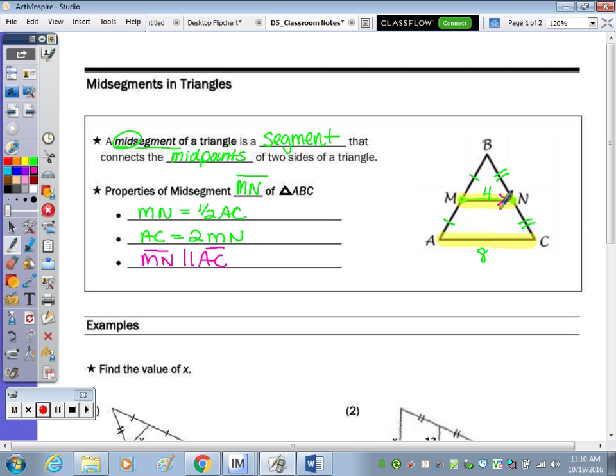So this segment, MN, is parallel to AC. So let's just make a note right here of all of our parallel line properties. So when two parallel lines are cut by a transversal, we have, let's say, X, that's the equivalent of corresponding angles congruent, alternate interior angles congruent, and alternate exterior. So all those angles that have an X are congruent, and all the ones with an O are congruent. And we know that X plus O is equal to 180.